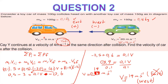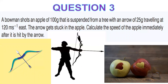Question 3: an arrow of 100 g shoots an apple of 25 g. The arrow is coming at 120 m/s to the east and gets stuck in the apple — so this is Case 2. We are looking for the speed of the apple and arrow together immediately after collision. The apple is initially suspended, so v2 initial = 0.